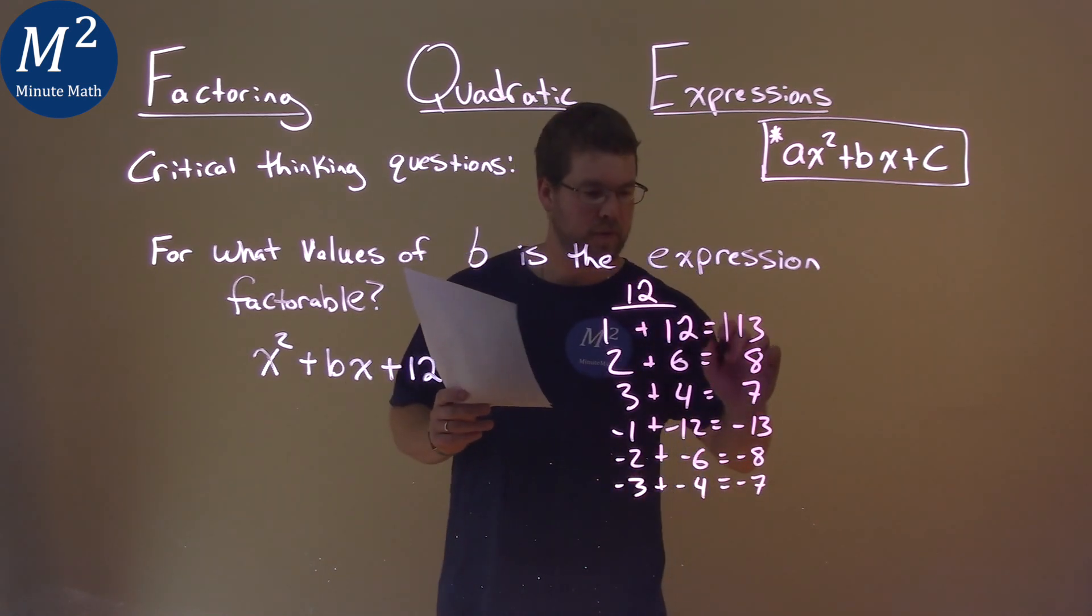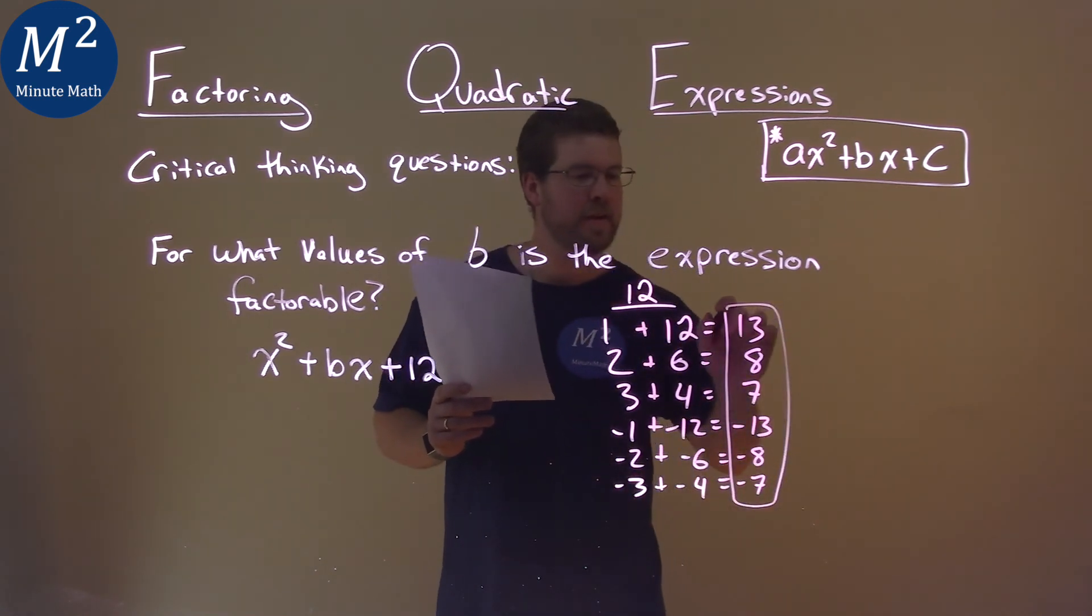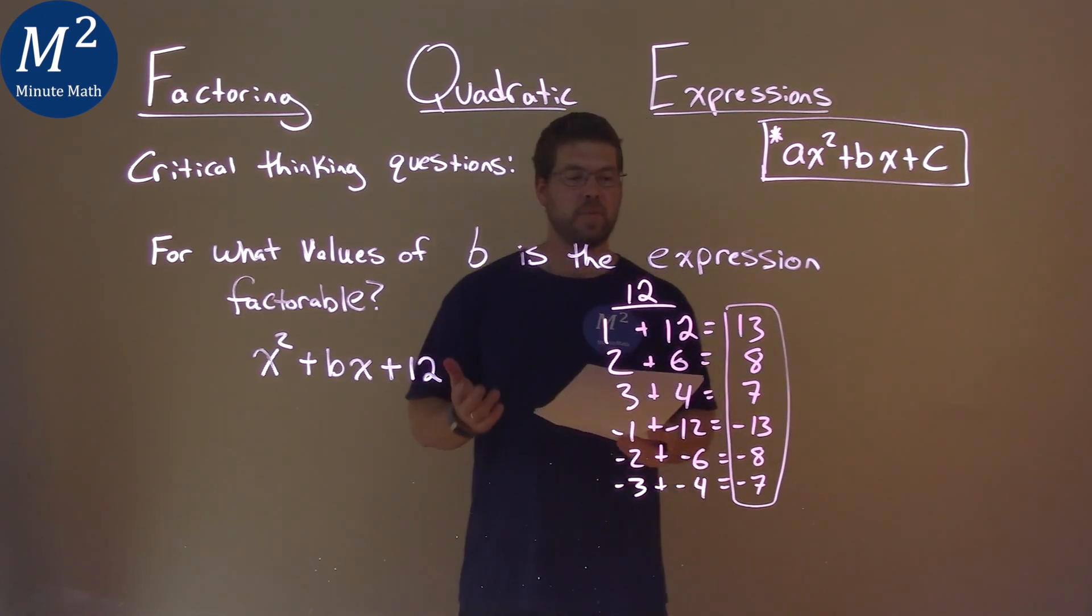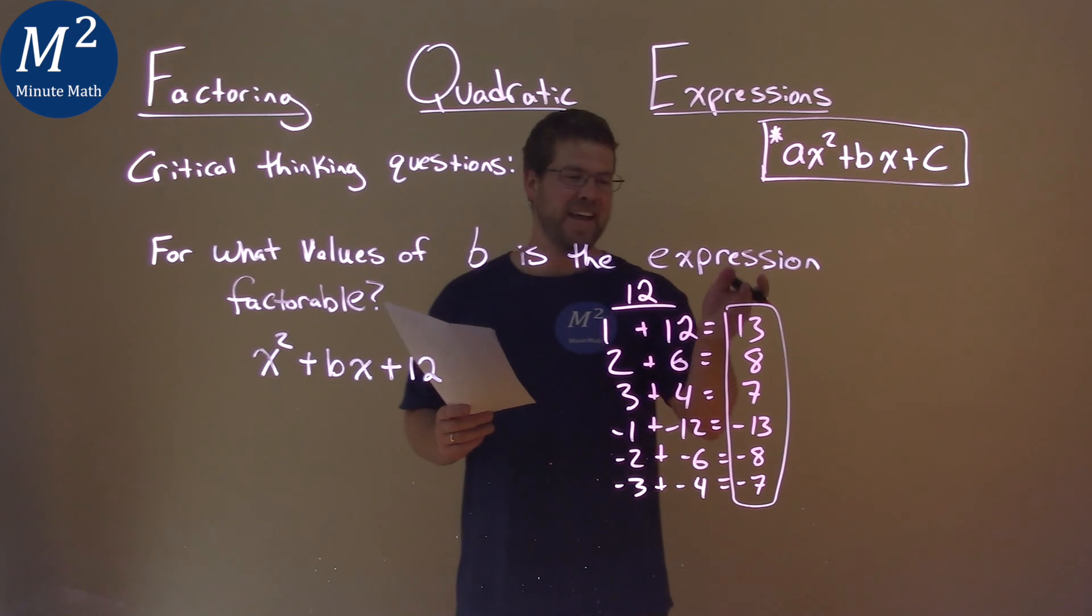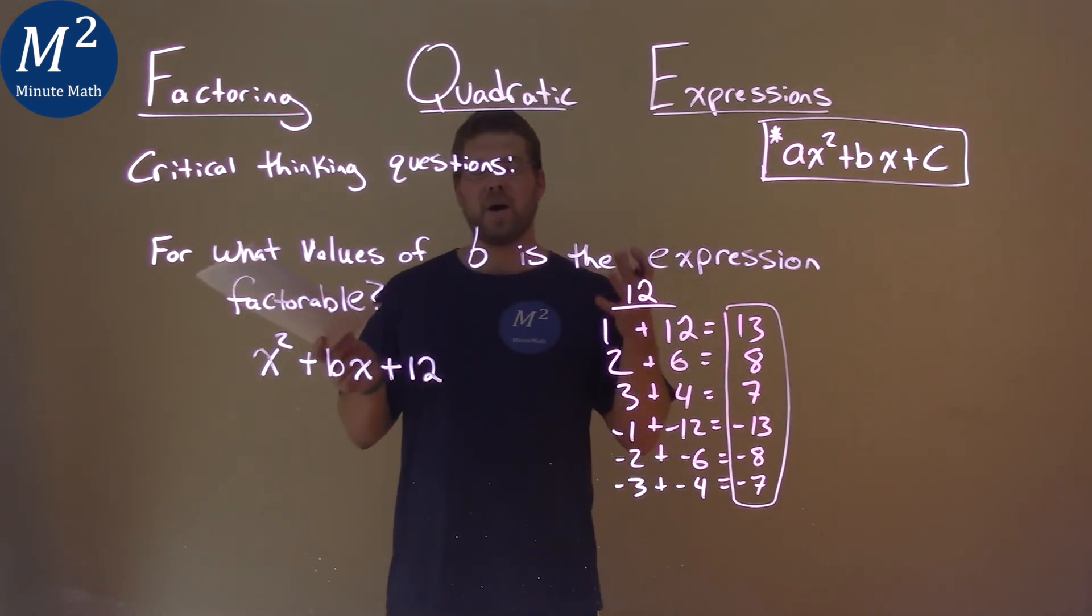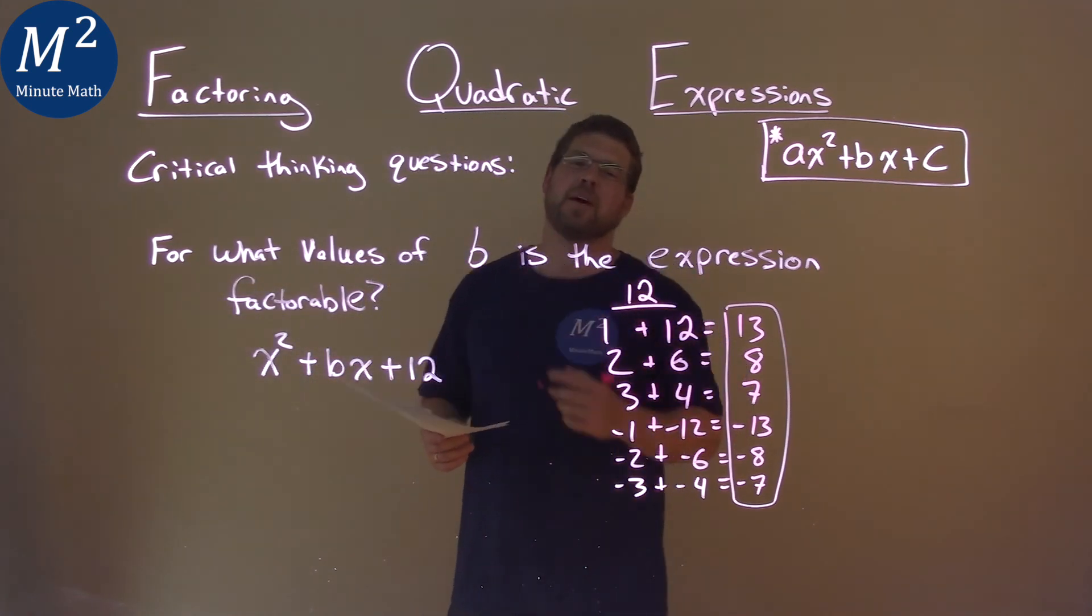And so actually here we have all of the possible b-values for this expression. 13, 8, 7, negative 13, negative 8, and negative 7 are all possible b-values that make this expression factorable, and that's our final answer.